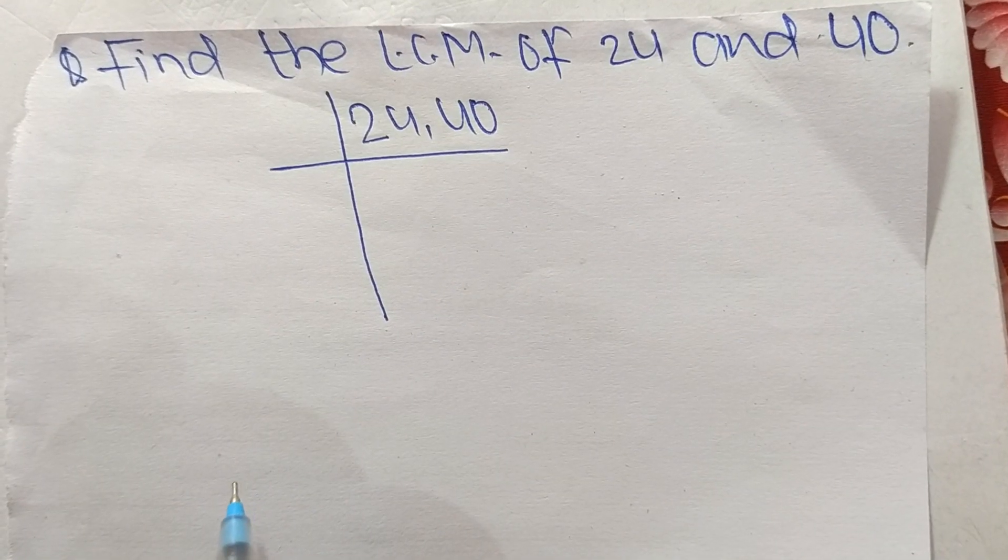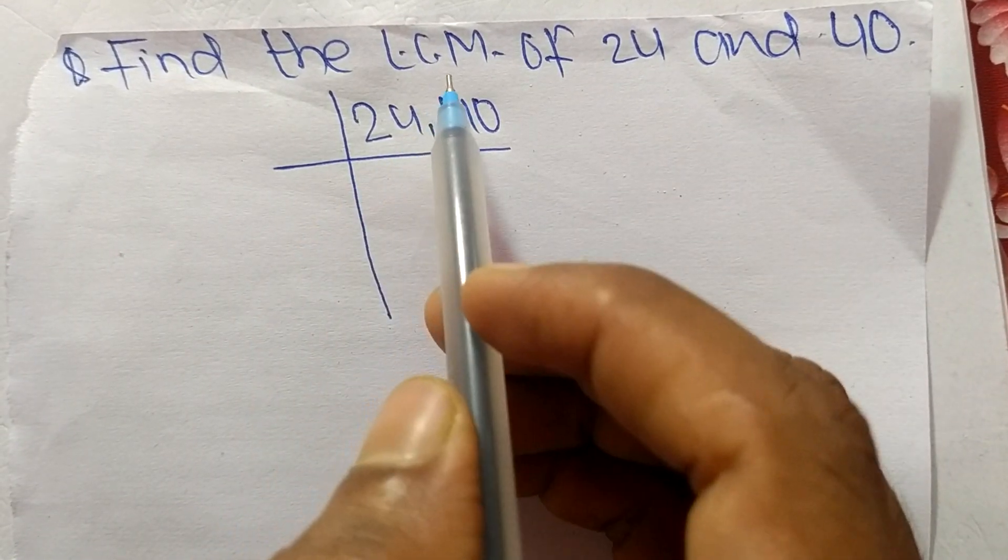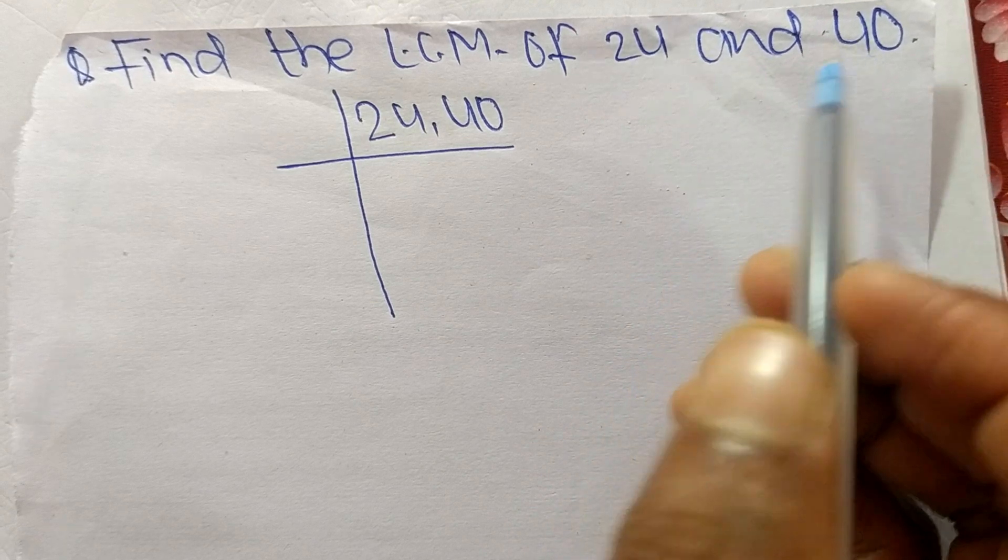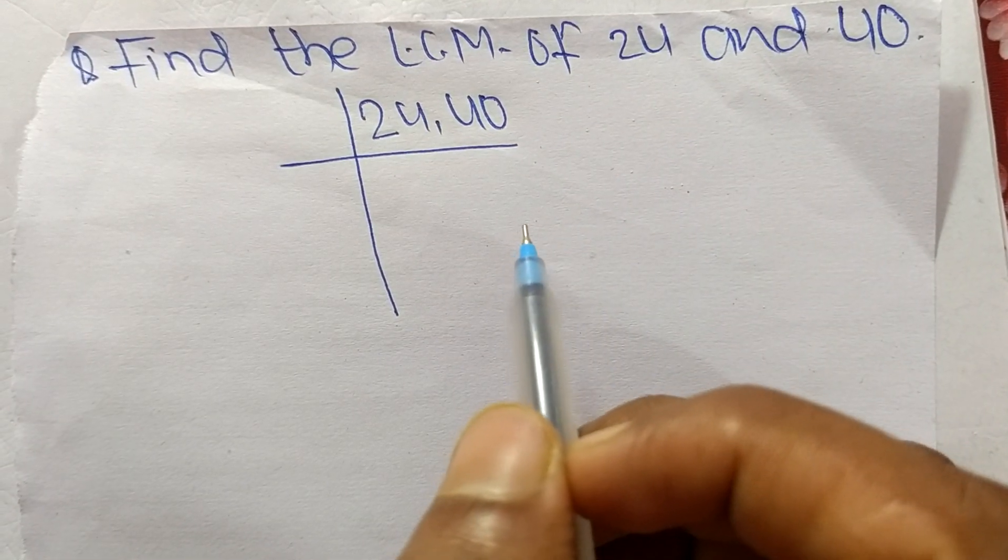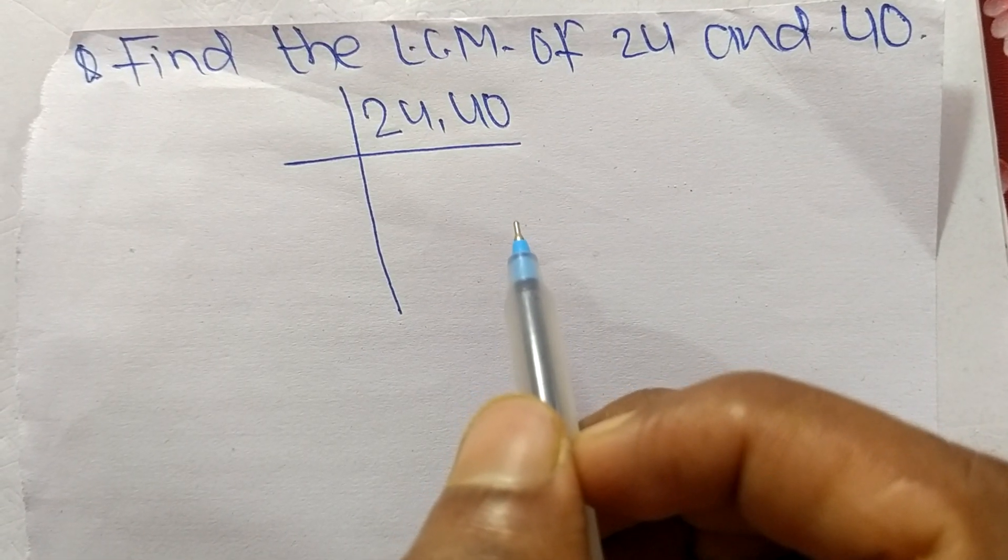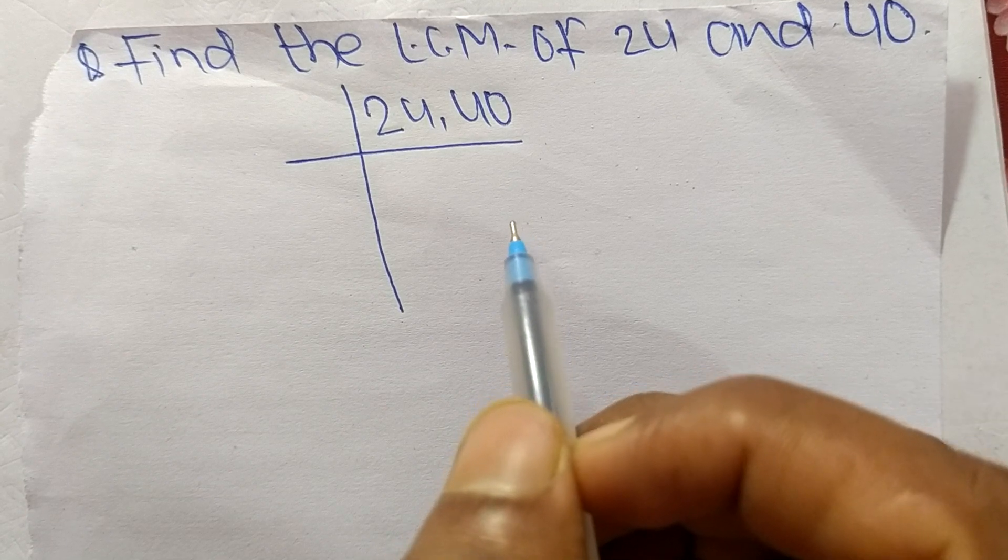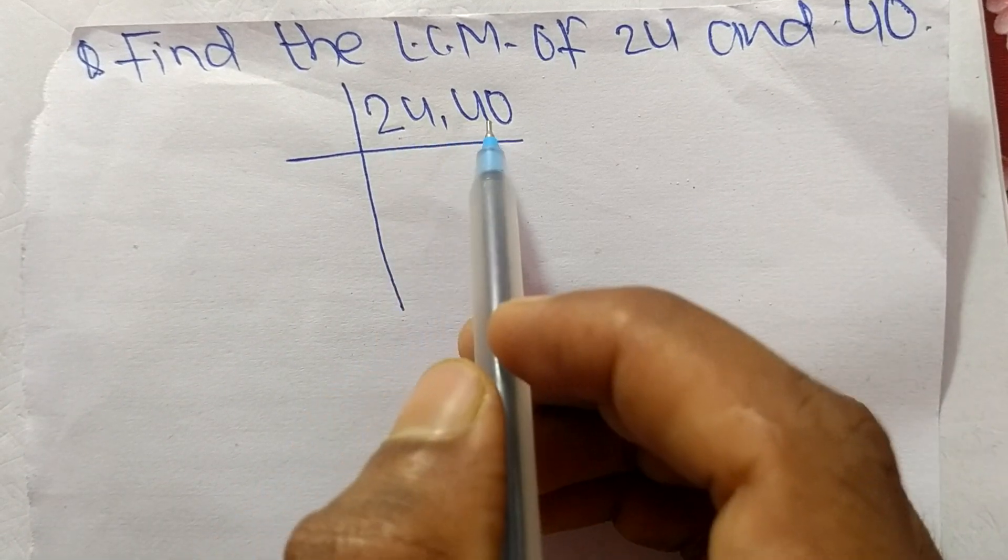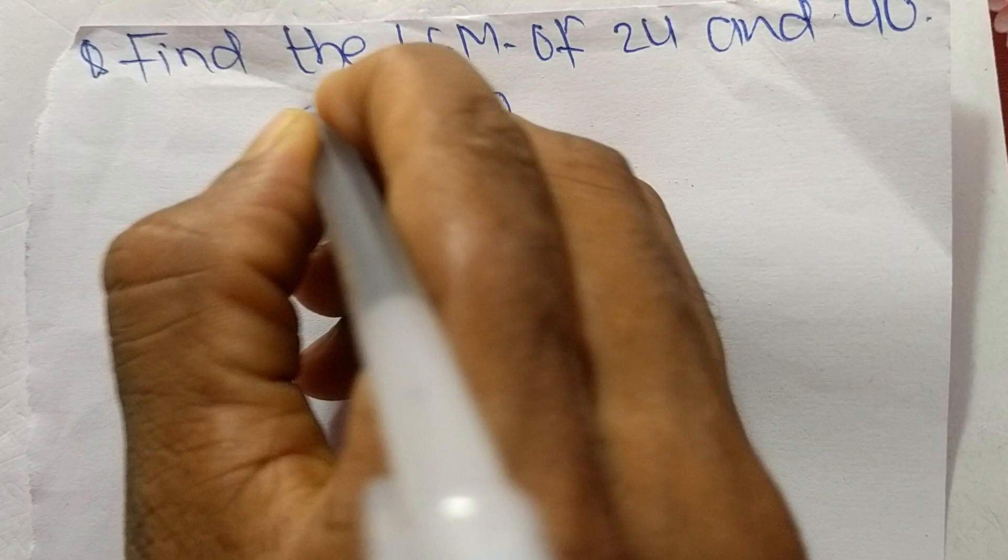So today in this video we shall learn to find the LCM of 24 and 40. To find LCM, first we have to choose the lowest number that can exactly divide 24 and 40, so the number is 2.